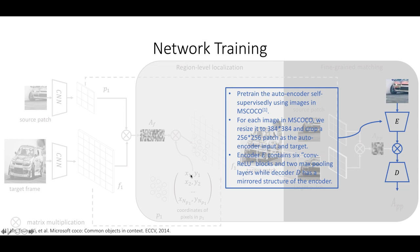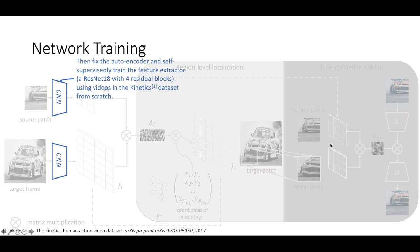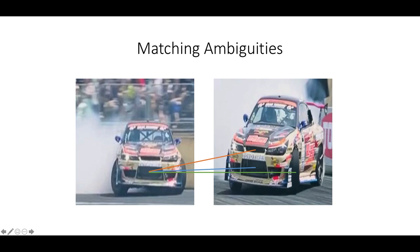Here are some network training details. We first train the autoencoder E and D using images in the MS COCO dataset. We only use images without any annotations, which means we can alternatively use any other large-scale image dataset without labels. To be comparable with related work, we use a ResNet-18 with full residual blocks as our CNN structure, and we always train it from scratch.